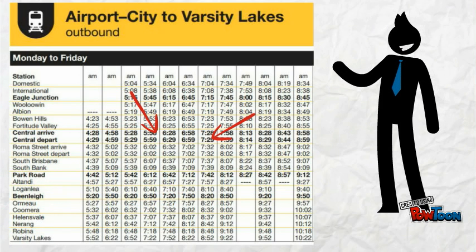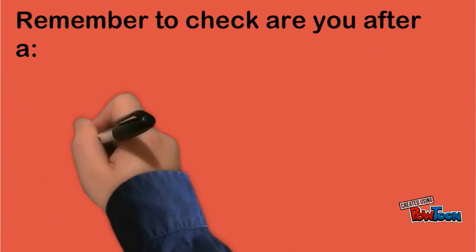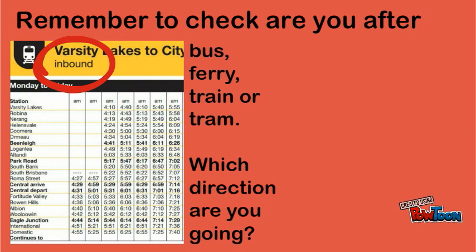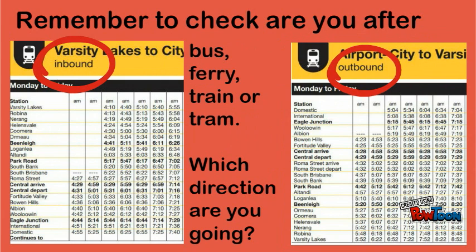One of the most important things to look at when reading a timetable is to look at where you are going. If you want to head into Brisbane City from your home, then you must look at the inbound timetable, as that is taking you to your destination. If you want to leave Brisbane City, then you are looking at the outbound timetable, as that is taking you from that destination.